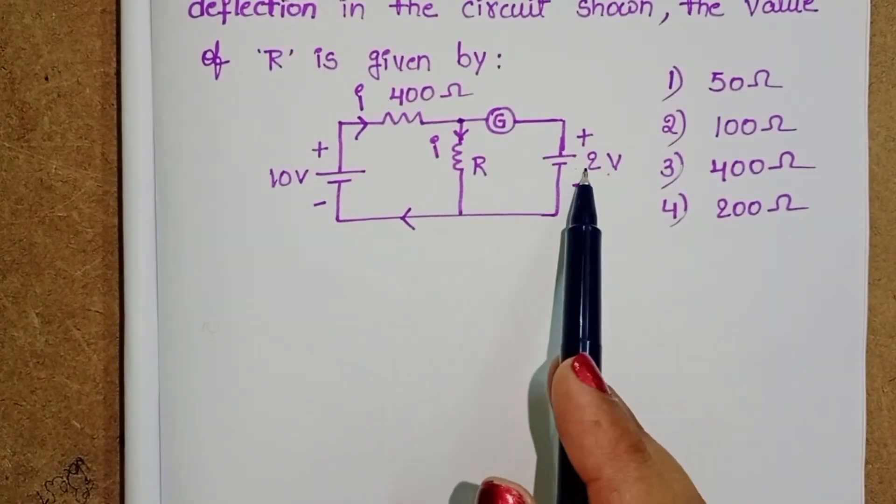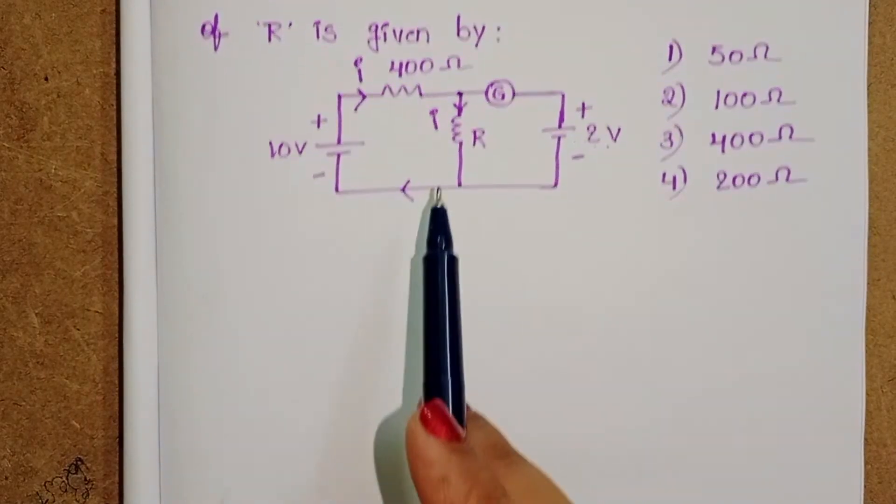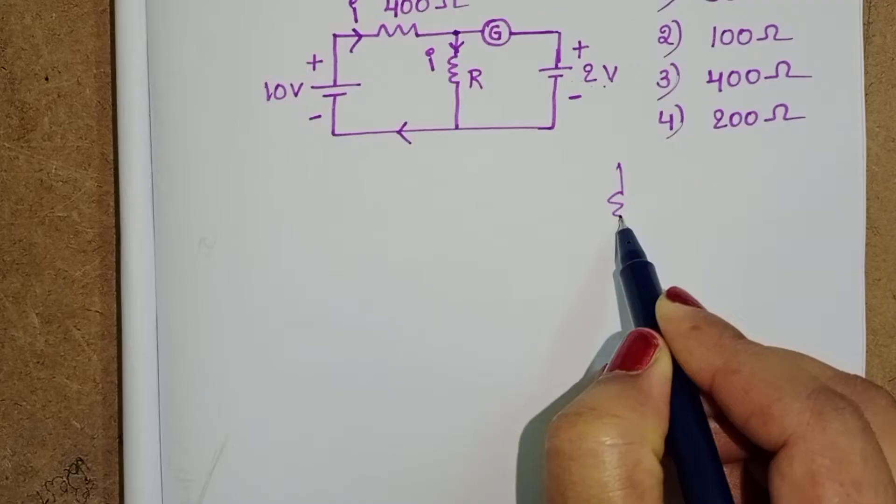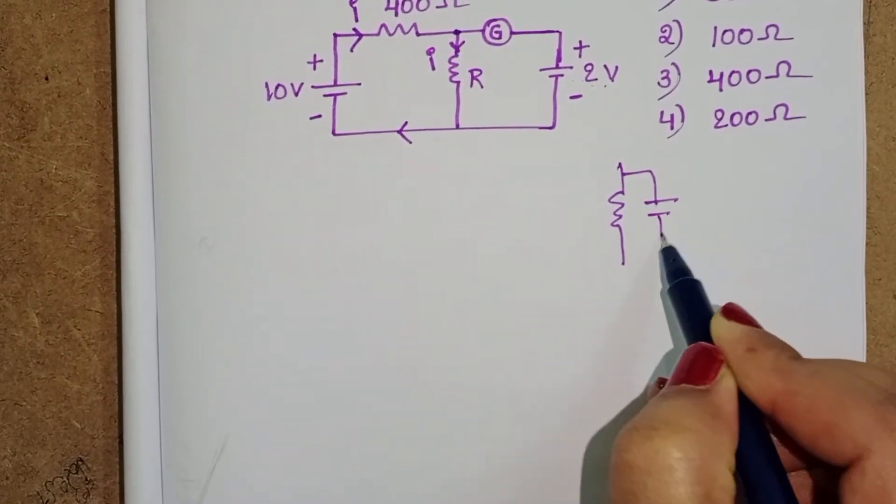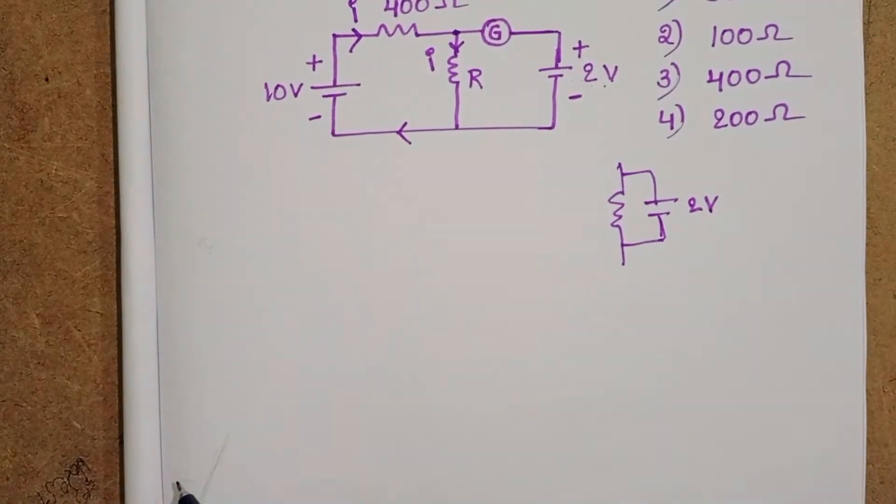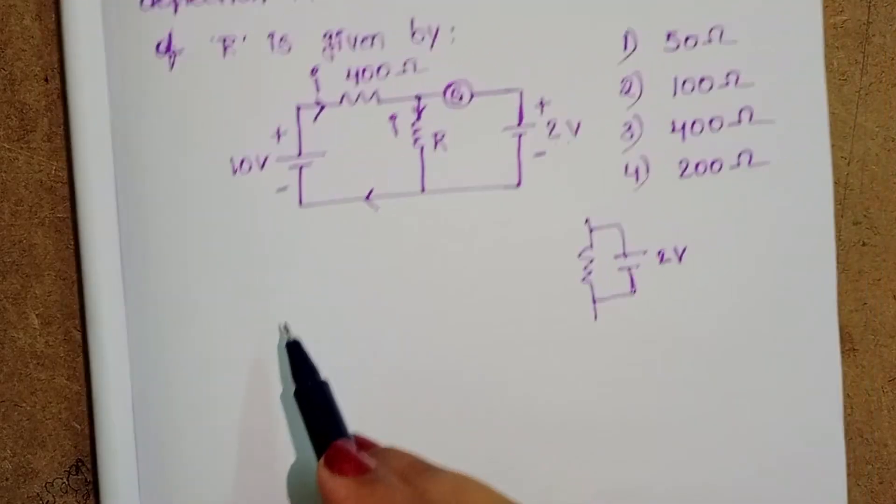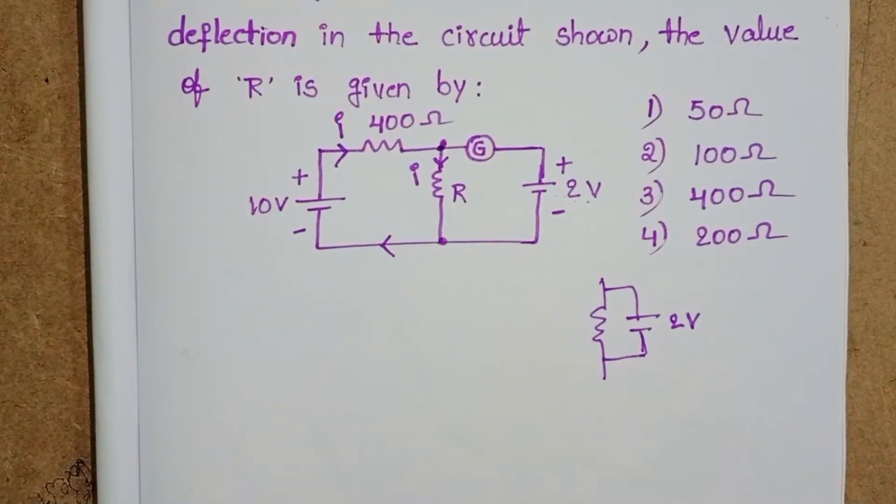This 2 volt battery is connected in parallel to the resistor. We know in parallel combination, potential difference is constant. Here potential is 2 volt. So the potential difference across this resistor is 2 volt.